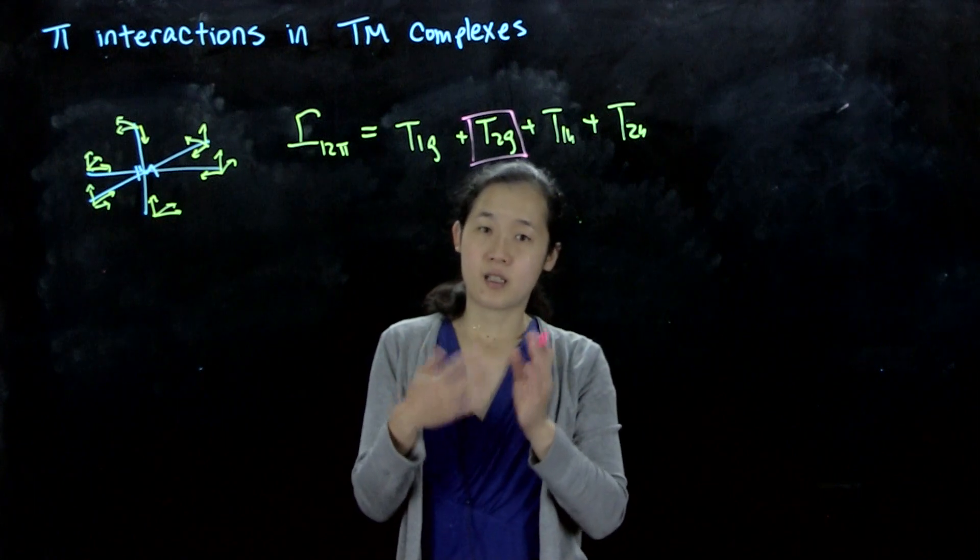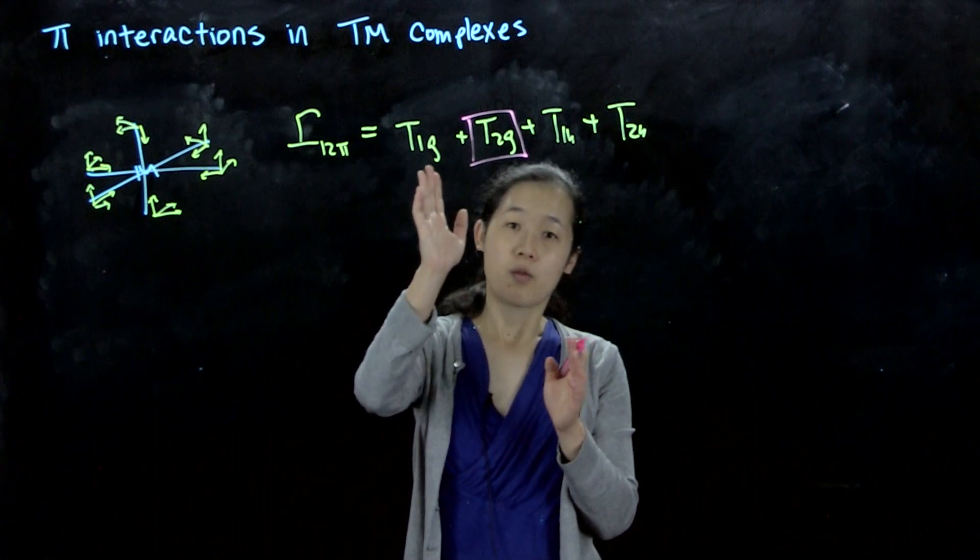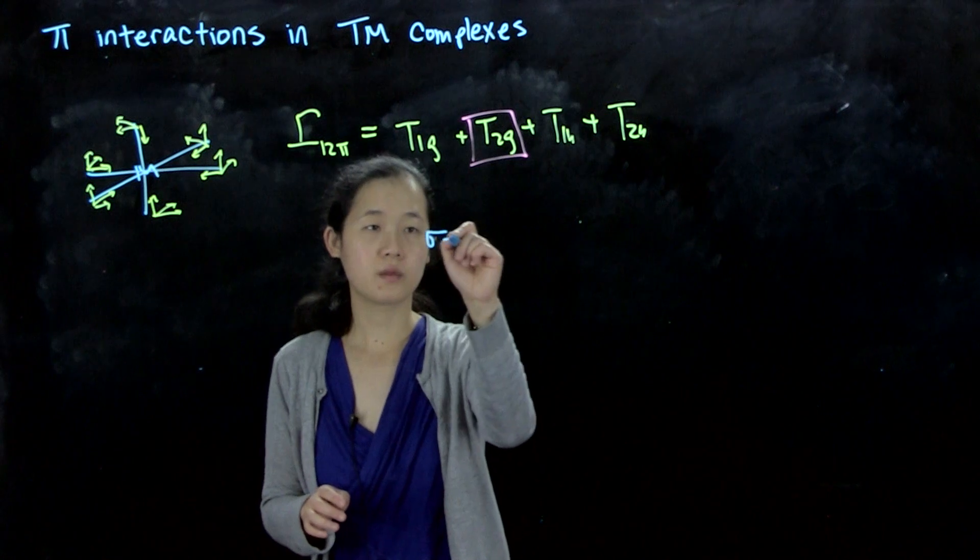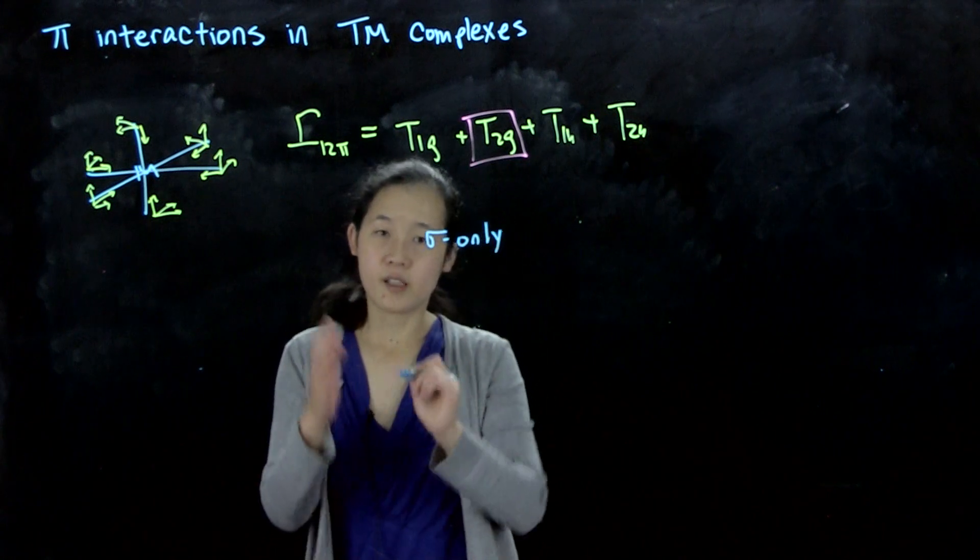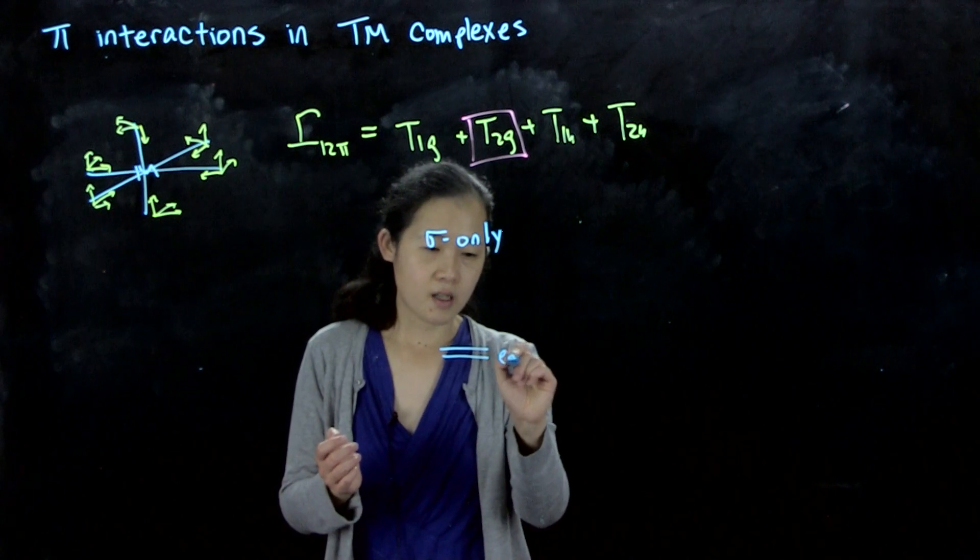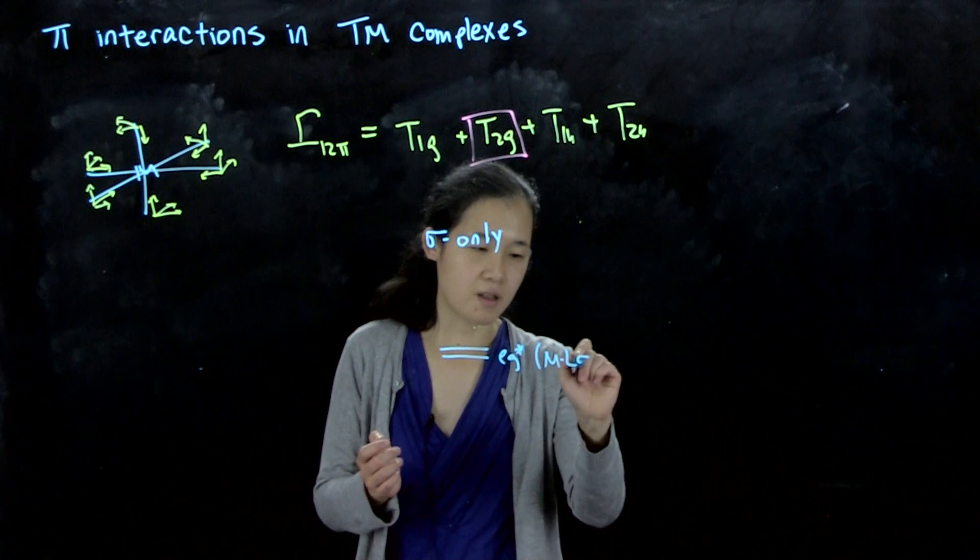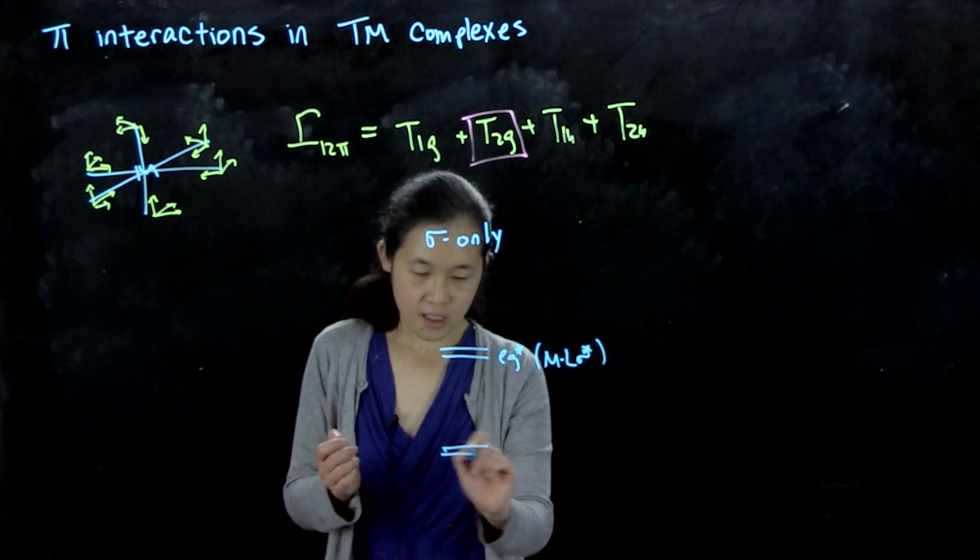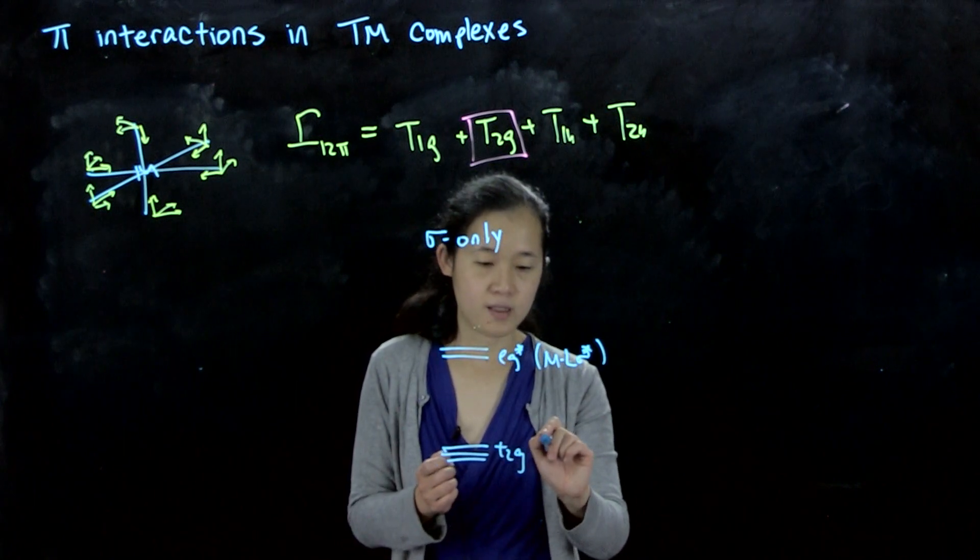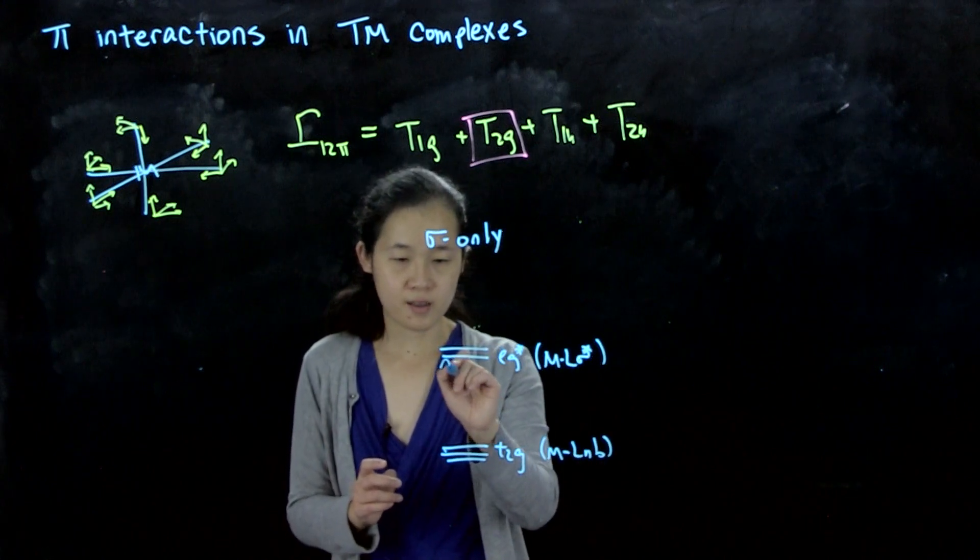Because if you're in octahedral, our d orbitals are EG T2G. So remember that previously, for sigma-only, our d orbital splitting pattern was like so. EG star, this was ML sigma star. And then we had our T2G, and this was ML non-bonding. And this was our delta O.